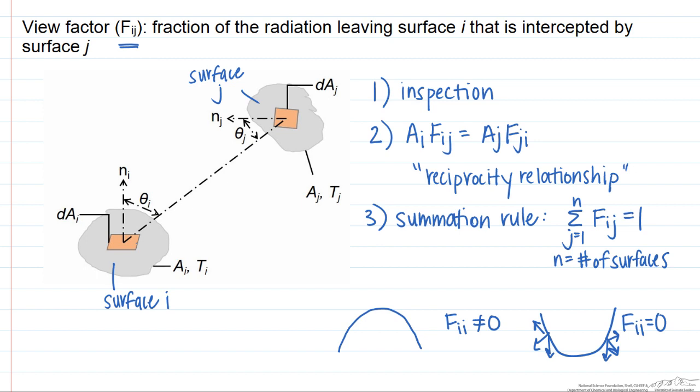We're going to look at a couple of examples where we'll only have two surfaces. So we'll have four different view factors. Just as a note, the number of view factors equals the number of surfaces squared.